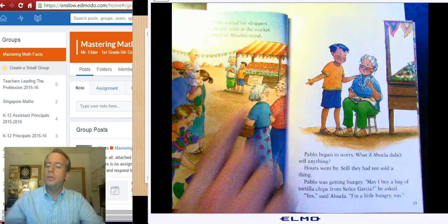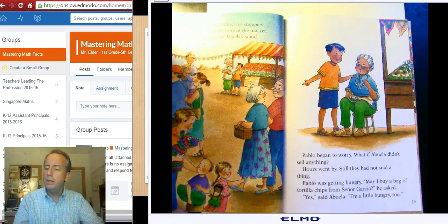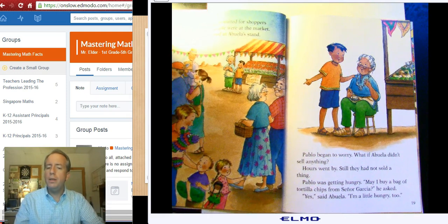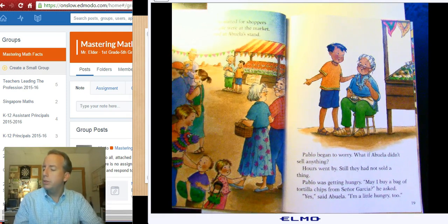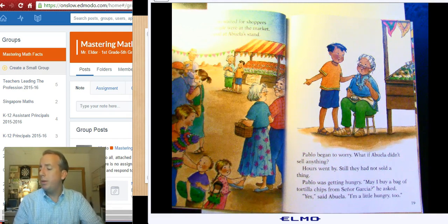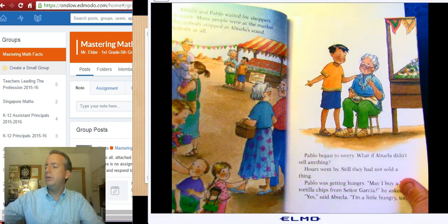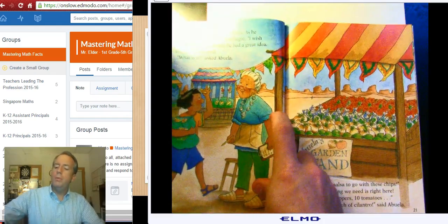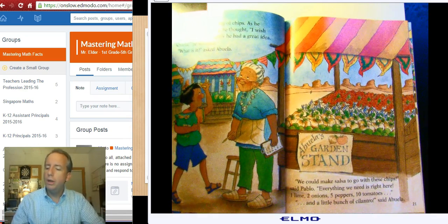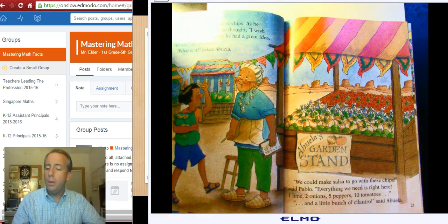Abuela and Pablo waited for shoppers to come. Many people were at the market, but nobody stopped at Abuela's stand. Nobody at all. Pablo began to worry. What if Abuela didn't sell anything? Hours went by. Still, they had not sold a thing. Pablo was getting hungry. May I buy a bag of tortilla chips from Senor Garcia, he asked. Yes, said Abuela. I'm a little hungry, too. Pablo bought a big bag of chips. As he walked back, munching, he thought, I wish I had some. Suddenly, he had a great idea.